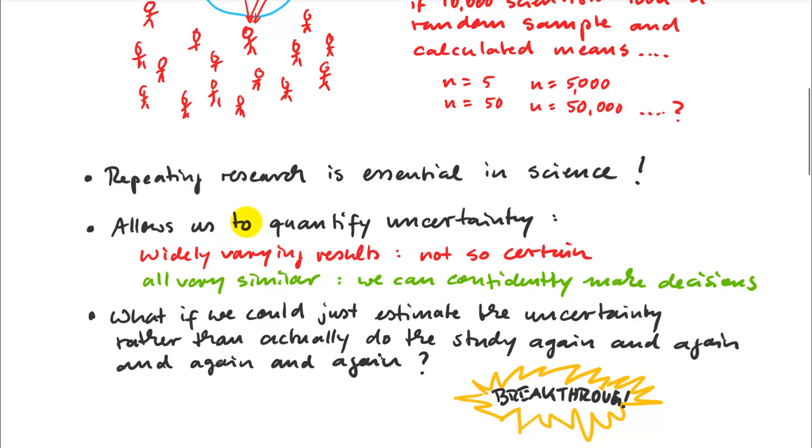So if we could pull this off, if we can skip all those repeats of the 10,000 scientists, so that we get the distributions of our means to quantify uncertainty, what if we could just estimate those from a single sample?